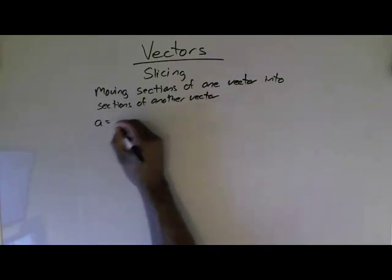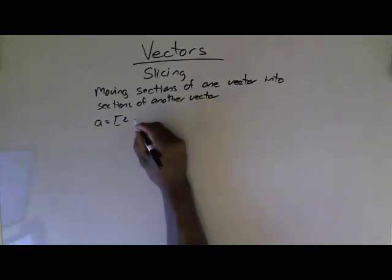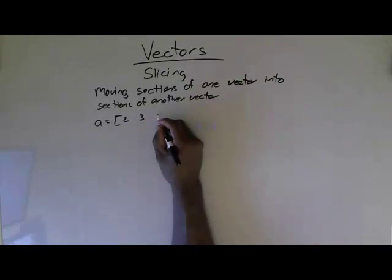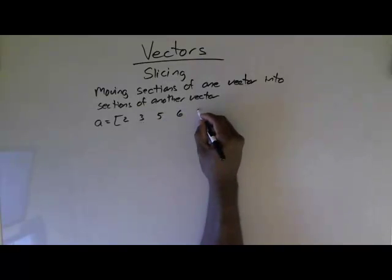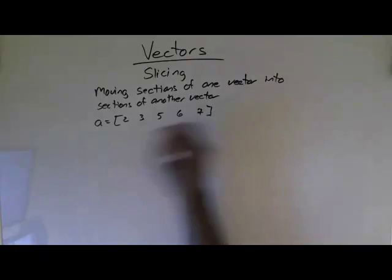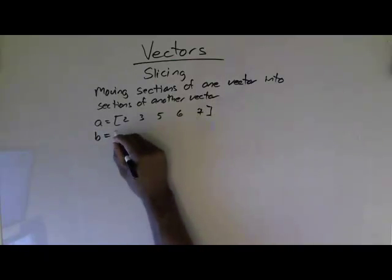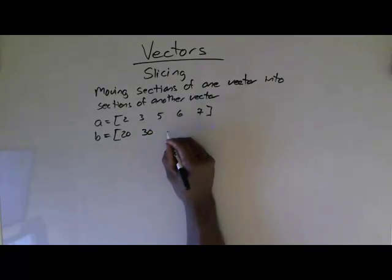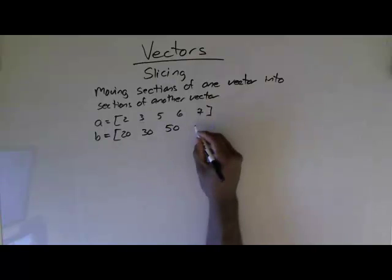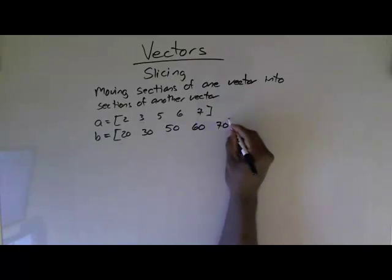Let's start off. Vector A equals 2, 3, 5, 6, 7. Vector B equals 20, 30, 50, 60, 70.